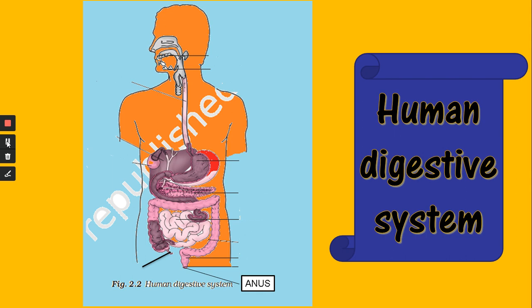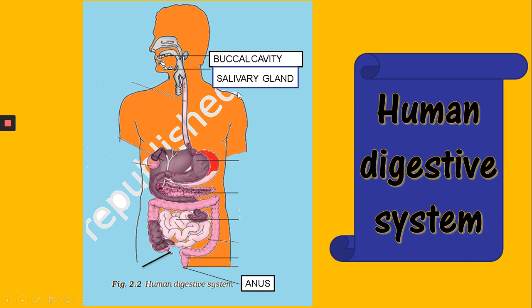In front of you there is a diagram of the digestive system of humans. Let's start with the starting point, that is the buccal cavity. In the buccal cavity there is the mouth opening, there are teeth, there is a tongue, and there are salivary glands. Now this buccal cavity opens into a pipe-like structure known as the food pipe or esophagus. This esophagus runs downwards and goes into a U-shaped sac-like structure.